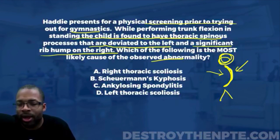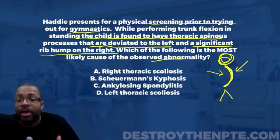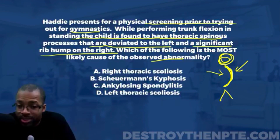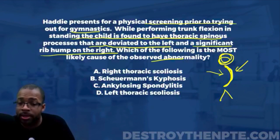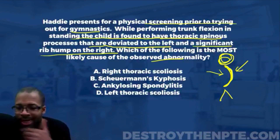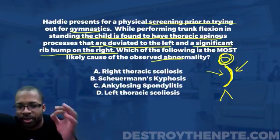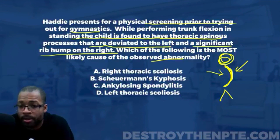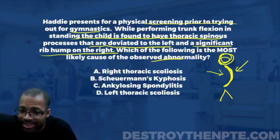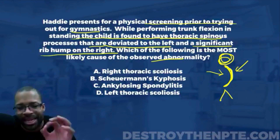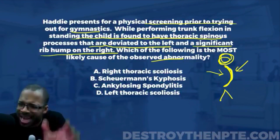If our patient bends over and has a right thoracic scoliosis, what do we expect to see? Write this down — this is important for your NPTE: with scoliosis, there is going to be a rotation of the vertebra to the side of the convexity. The spinous processes are deviated to the left, which indicates right rotation of the spine. That fits right thoracic scoliosis perfectly.